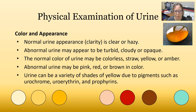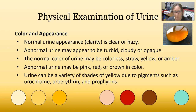A normal urine appearance or clarity is going to be clear or maybe slightly hazy. A normal urine could also appear to be turbid, cloudy, or opaque. The normal color of urine could be colorless — almost like water — straw colored, yellow, or amber.